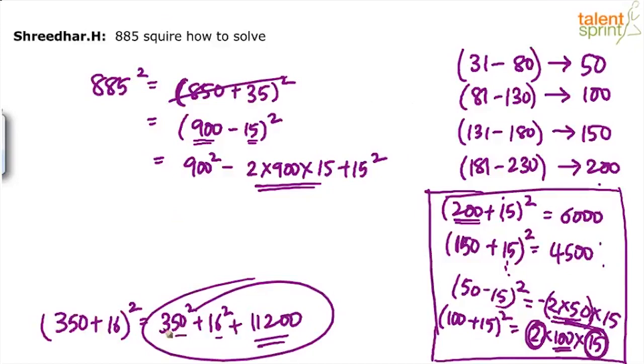A square b square will take like simple 35 square is 1225. So this will be 122500. This is 256. This is 11,200. What you just need to do is add the terms now.